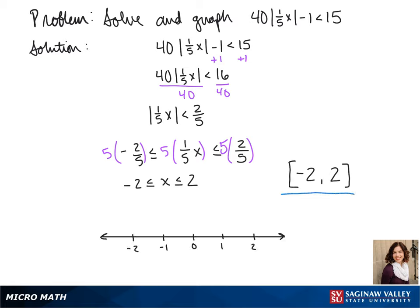To graph this, we have a closed circle at both negative 2 and 2, and again, it's anything in between them, so our line goes between them.